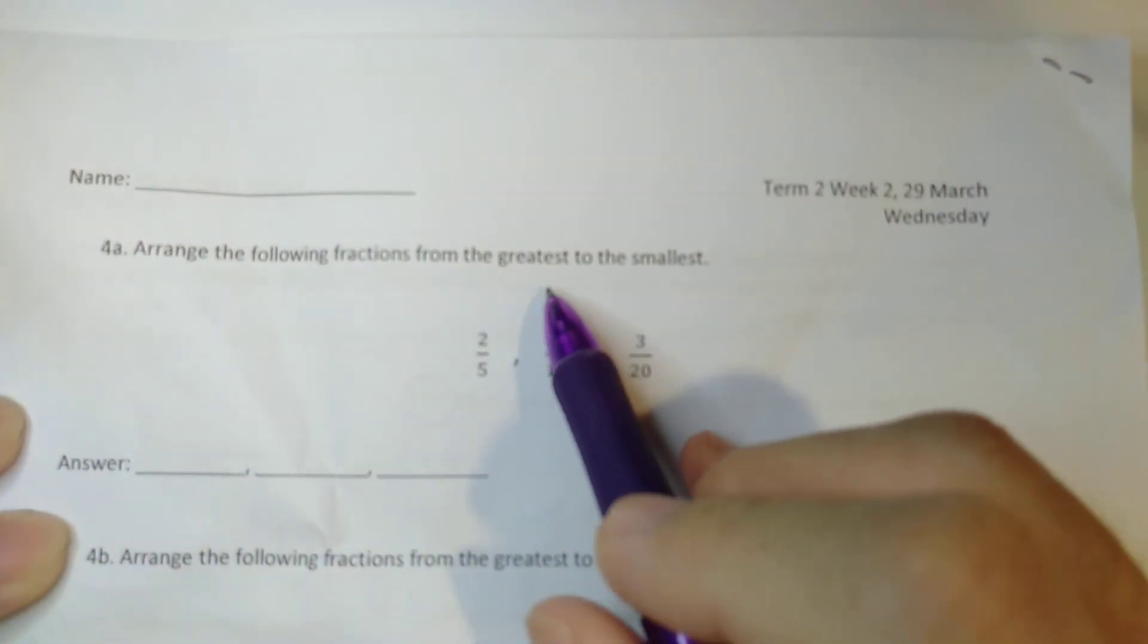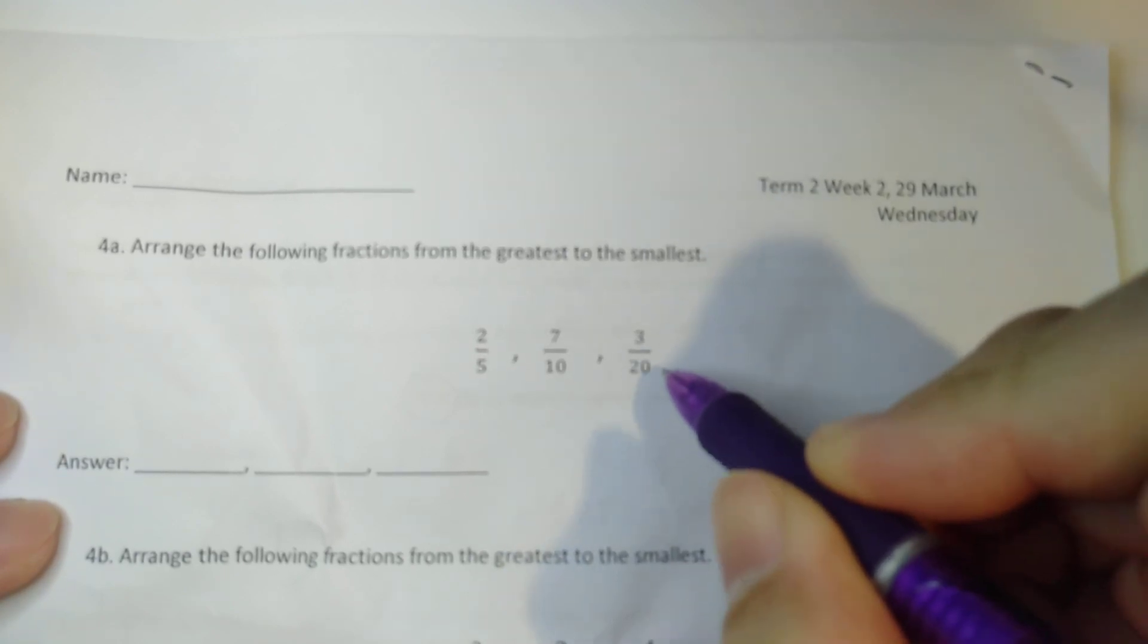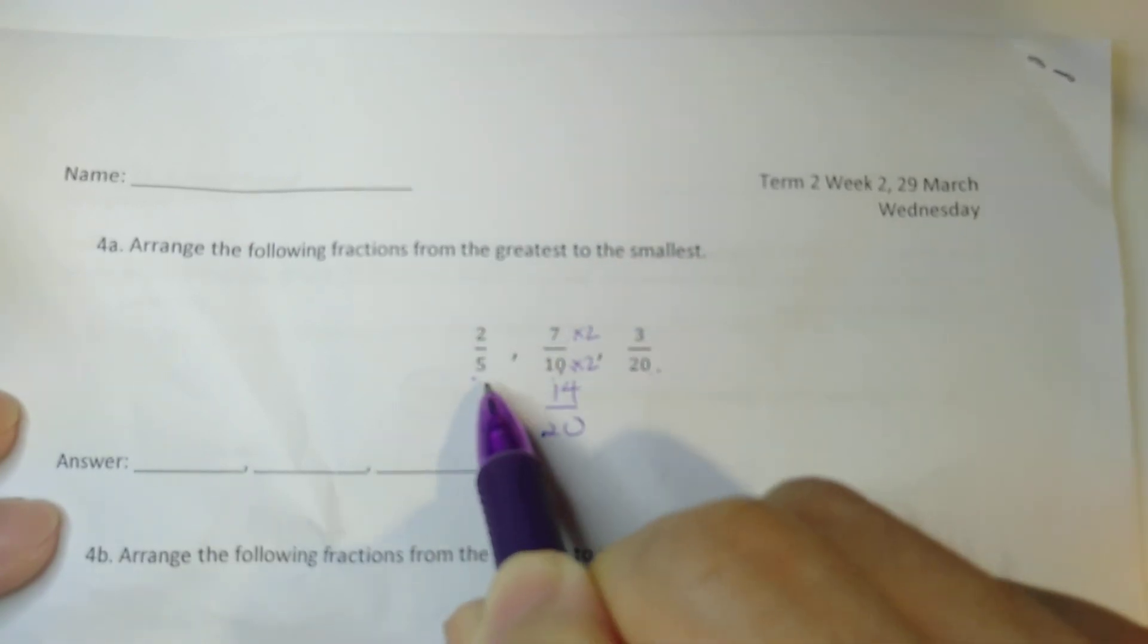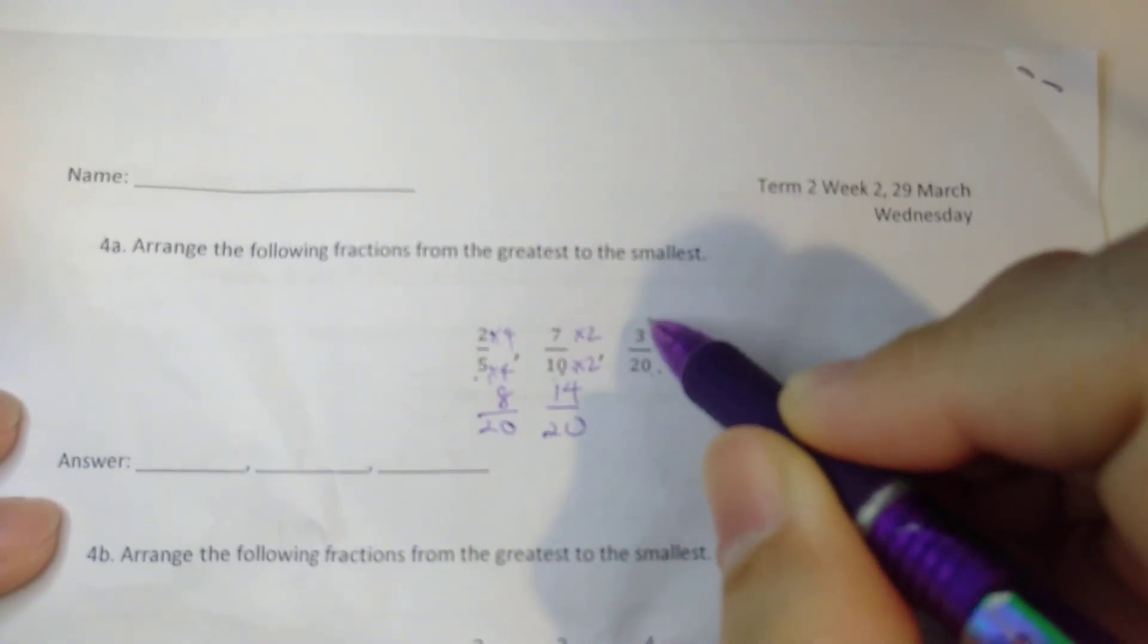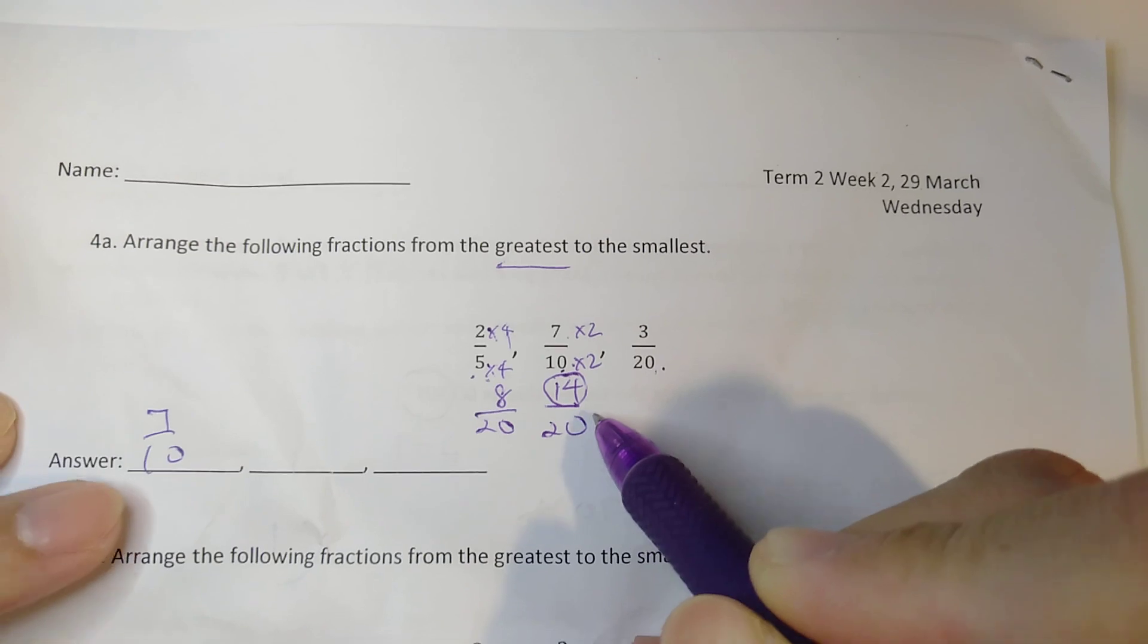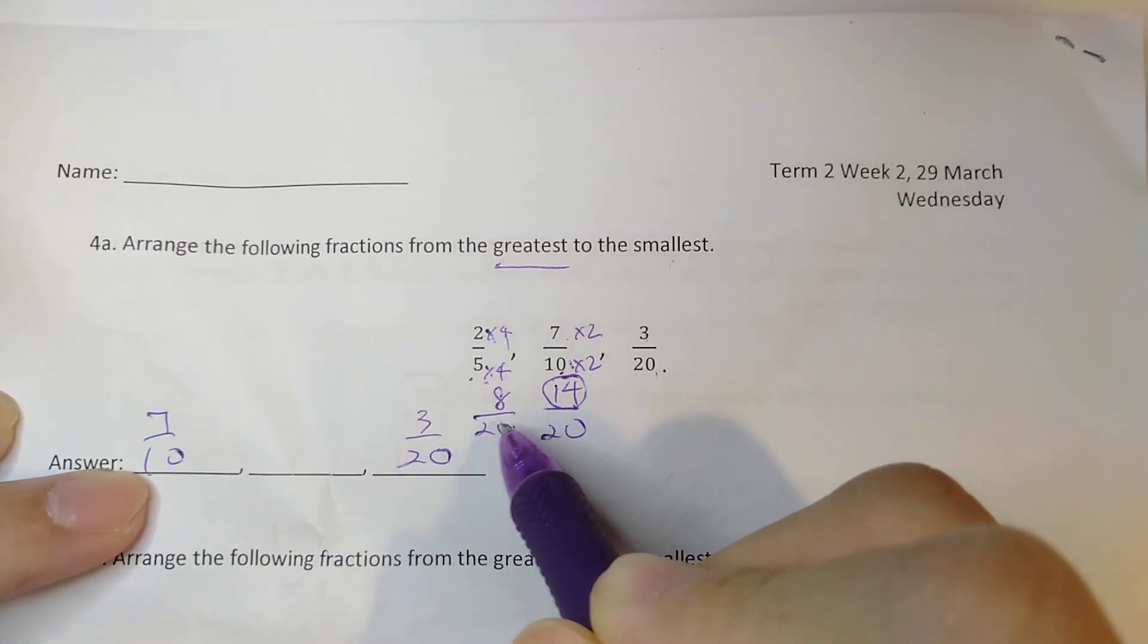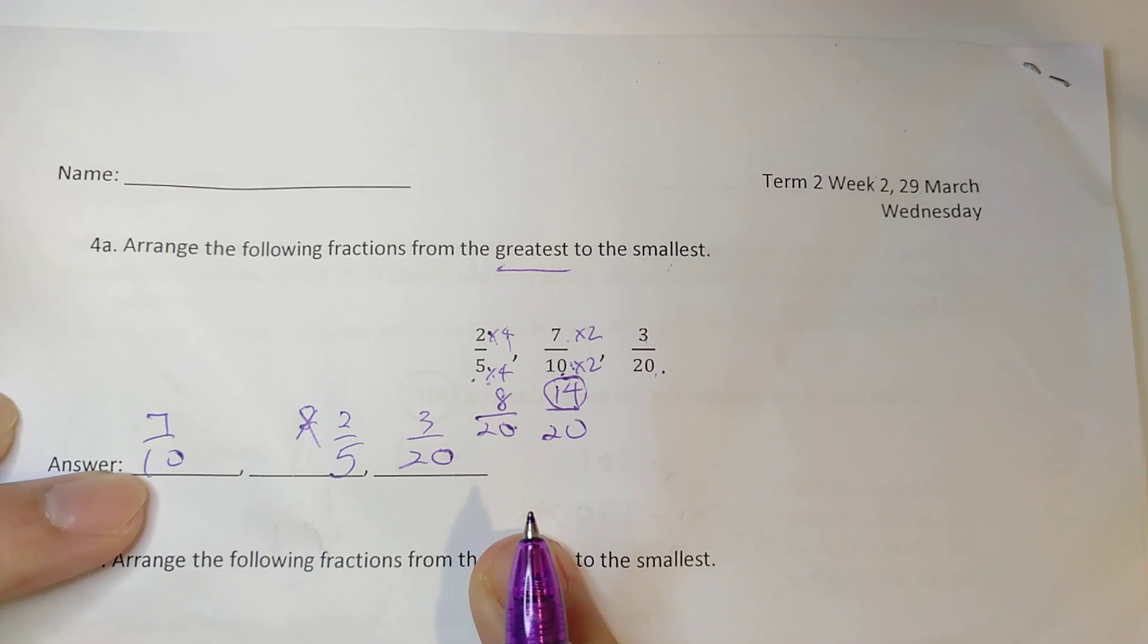Now, in this question, I'm supposed to arrange the fraction from the greatest to the smallest. Now, to make the comparison, let's change all the denominator to the same first. This is 20, this is 10, this is 5. Let's change this to 20. We'll change it to 20. 10 times 2, 20. 7 times 2 is 14. This one, I change to 20. I times 4, times 4. I get 20. I get 8. Now I compare. Greater, so the largest number. This is the largest number. So I write 7, 10. So remember, I don't write 14 divided by 20, because that's not the originally given fraction. Smallest will be 3, 20. So this is your 8. I don't write this. I write my 2 fifth. So that's the answer for question 4a.